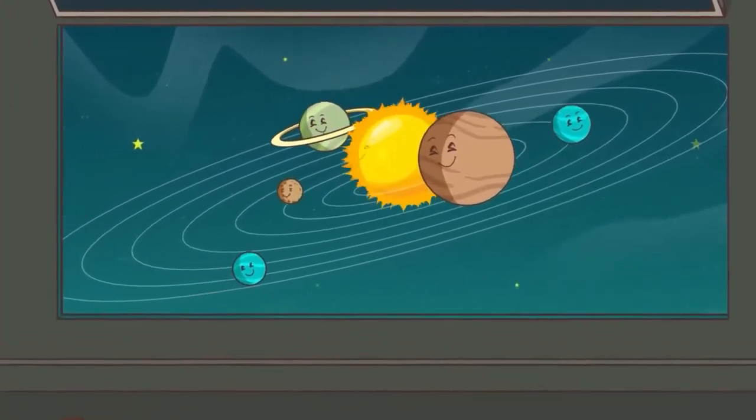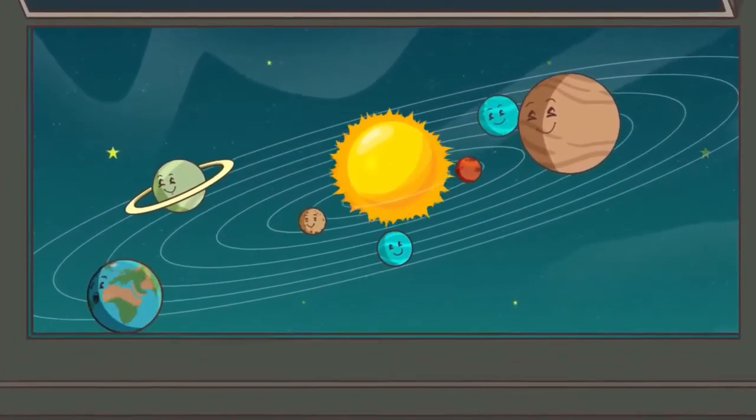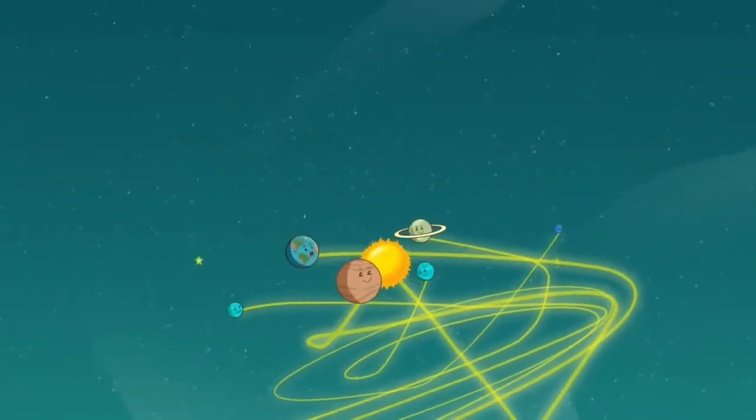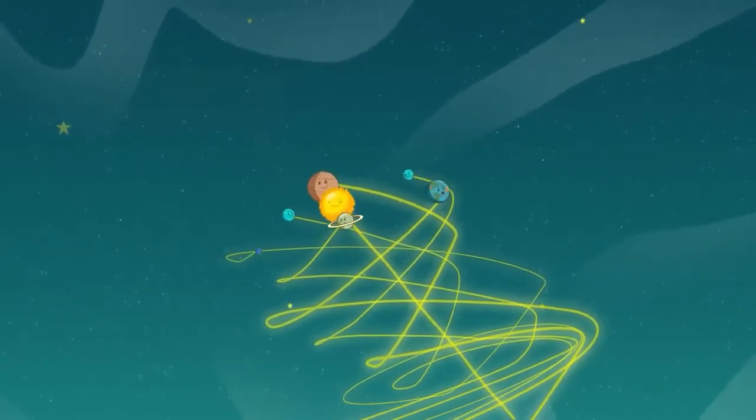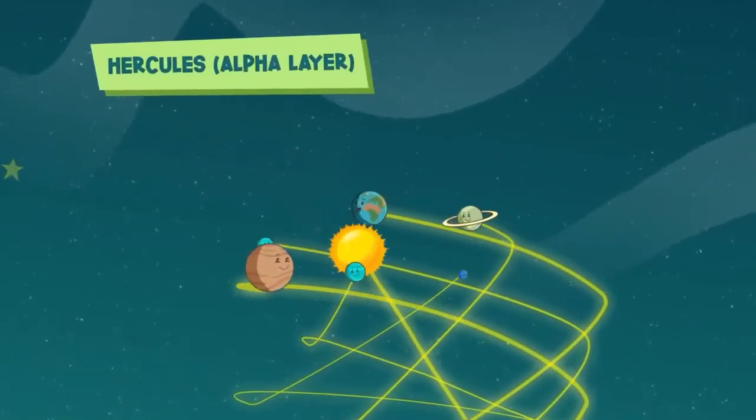The fixed place towards which the sun travels, carrying with it the solar system, has been located exactly by modern astronomy. It has been given a name, the solar apex. The solar system is indeed moving in space towards a point situated in the constellation of Hercules, the alpha layer.